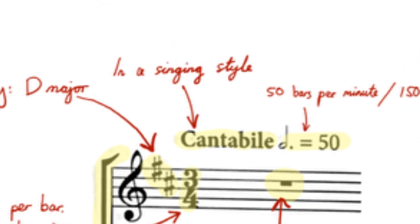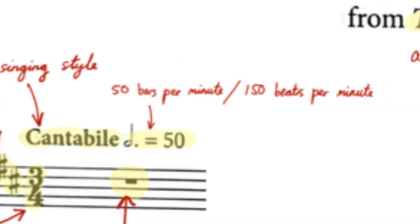In the opening bar, there is a character marking, cantabile, which means in a singing style. Next to that we get the metronome mark, dotted minim equals 50. As a dotted minim is the length of the whole bar, you can think of this as meaning 50 bars per minute. If you consider crotchets to be the beat, you need to multiply that number by 3 for 150 beats per minute.